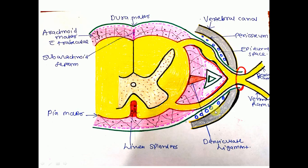This is the bone of the vertebral canal, that is the vertebral foramen. This is the periosteum of the vertebrae. The space between the dura mater and periosteum of the vertebral foramen is known as the epidural space — 'epi' means outside. The epidural space contains the internal vertebral venous plexus, which we can see here as the blue-colored structure.